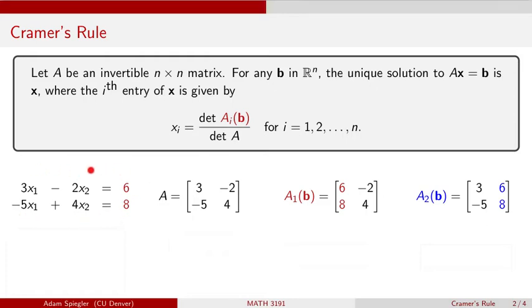So let's see what that would look like for this example. I want to solve this system of two linear equations using Kramer's rule. So I'm going to need to know what is the determinant of A, and what is the determinant of Aᵢ(b) for i equals 1 and 2 in this case, because we have two linear equations. So again, here's matrix A, we have matrix A₁(b) and matrix A₂(b).